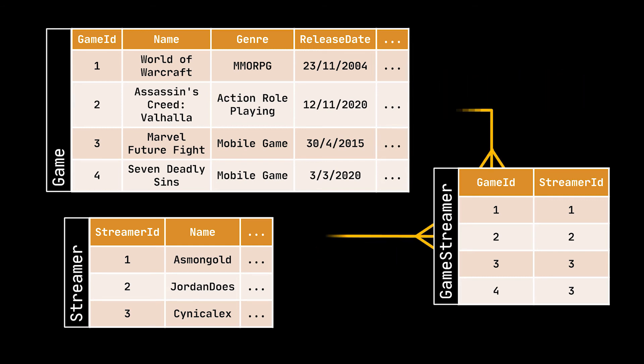As you can see, in this table we are actually defining two one-to-many relationships. So we can take a streamer ID, go to the junction table to see the list of game IDs it contains, then go to the game table and fetch the relevant information of those games, and vice versa — we can start with a game ID and fetch all the streamers streaming that game.